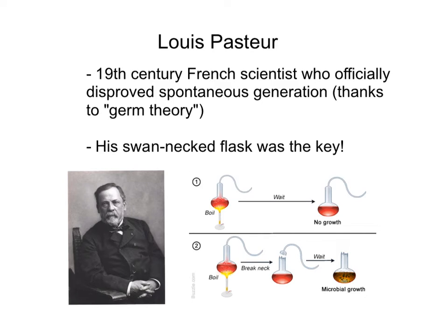Next up, Louis Pasteur. The process of pasteurization is named after him. Milk and alcoholic beverages are pasteurized — it's a way of flash heating to get rid of germs or bacteria. It doesn't get rid of 100% of them, but it certainly prolongs the life of the beverage. He's a famous 19th century French scientist who officially disproved spontaneous generation thanks to his germ theory. He was convinced that there were little germs — bacteria, microscopic — that caused people to get sick, transferred from person to person, not spirits or demons or a vital force in the air.